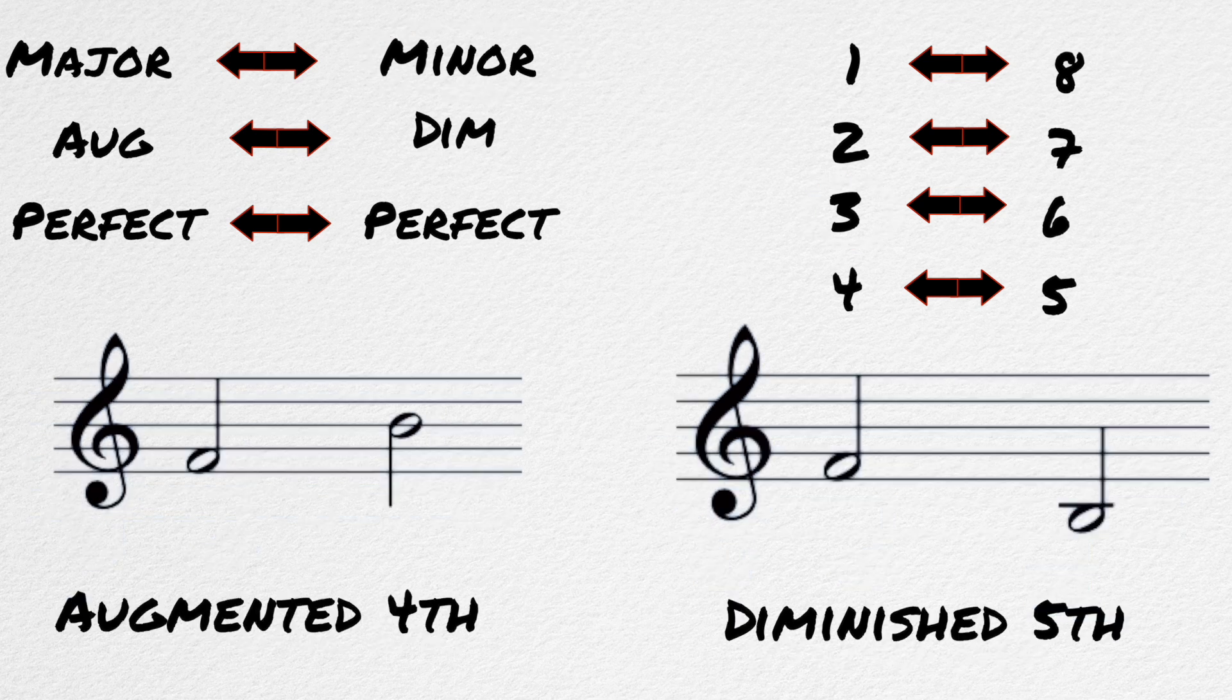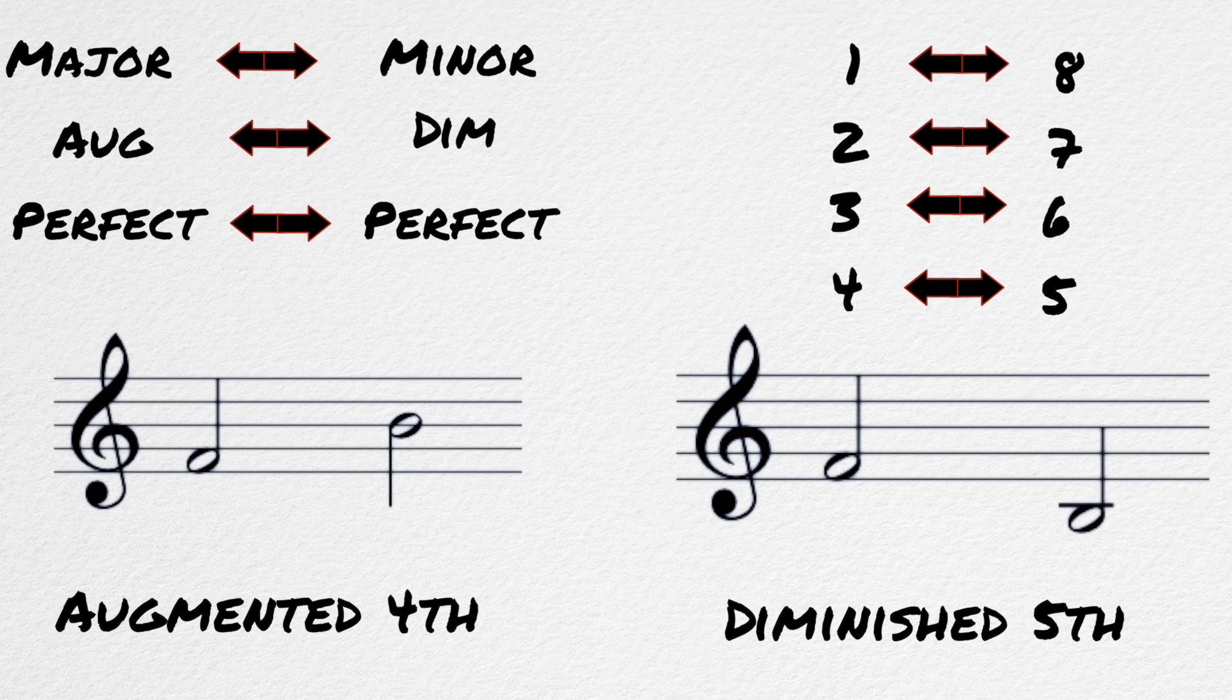The one interval that reflects onto itself, at least in sound, is the tritone. The written interval will become its enharmonic equivalent. An augmented fourth will become a diminished fifth.